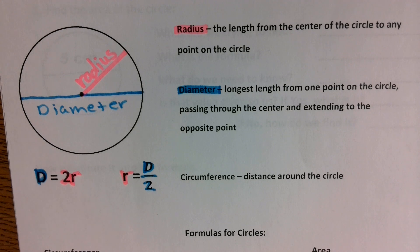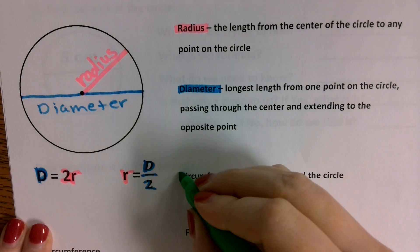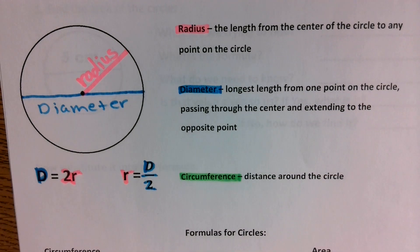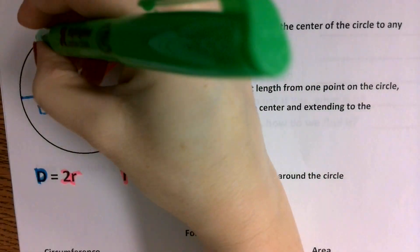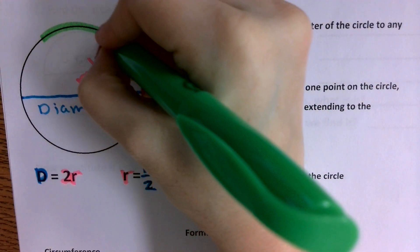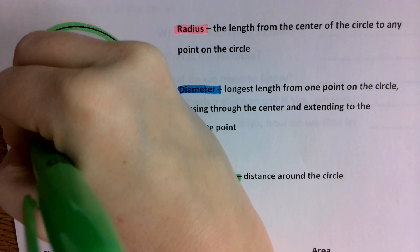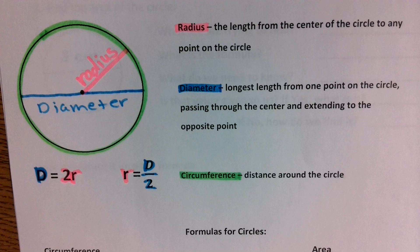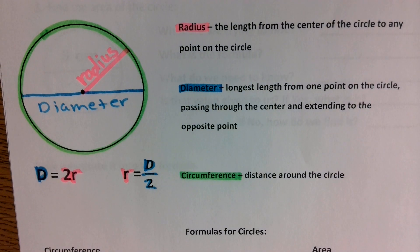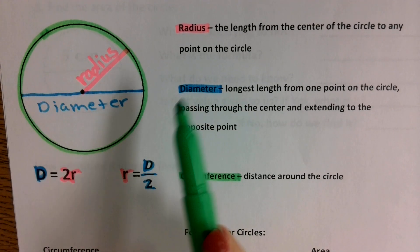We have this last measurement — the circumference. You know this measurement for other shapes as perimeter, the distance around the shape. When it's a circle, we call it circumference, because the technical definition of perimeter is when you add all the sides together. Does a circle have sides? No. A circle is not a polygon, so it does not have a perimeter. So we call it circumference.